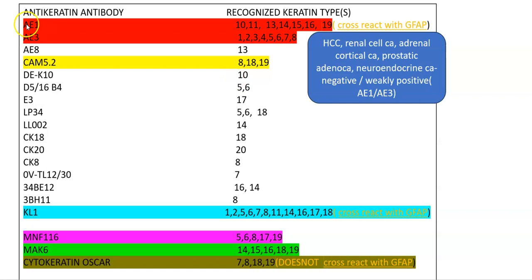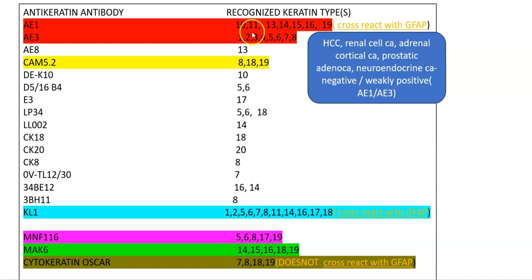The antikeratin antibodies used include AE1 and AE3. AE1 is used for keratins 10, 11, 13, 14, 15, 16, and 19. AE3 is used for cytokeratins 1, 2, 3, 4, 5, 6, 7, and 8. AE1 and AE3 are usually used together.